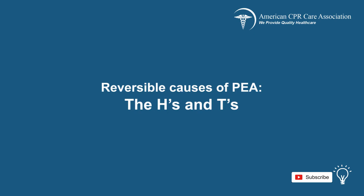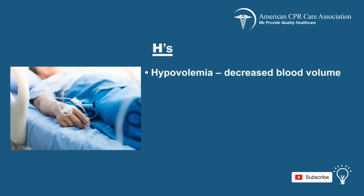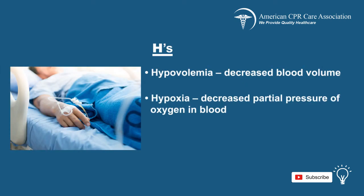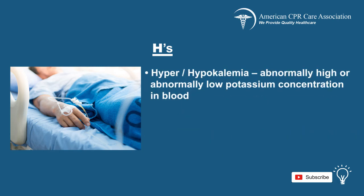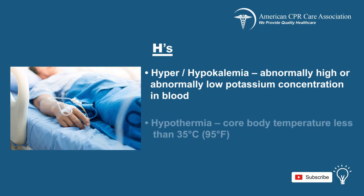PEA can be caused by many reversible causes which are represented by the Hs and Ts. The Hs are: Hypovolemia, which is decreased blood volume; Hypoxia, a decreased partial pressure of oxygen in the blood; Hydrogen ion buildup known as acidosis; Hyper or hypokalemia, either an abnormally high or abnormally low potassium concentration in the blood; and Hypothermia, defined by a core body temperature less than 35 degrees Celsius or 95 degrees Fahrenheit.